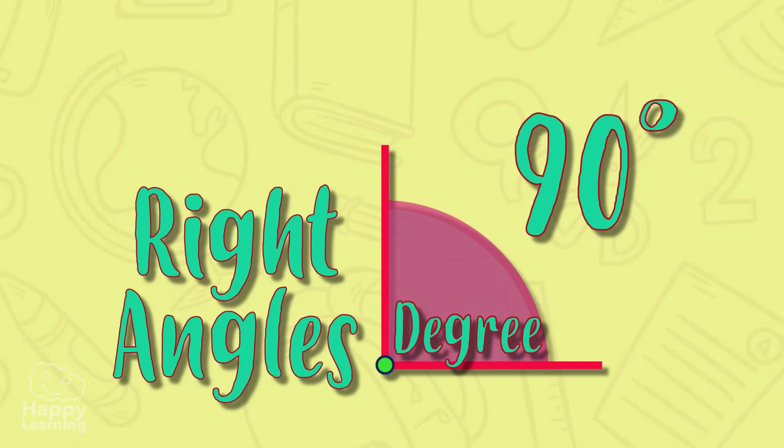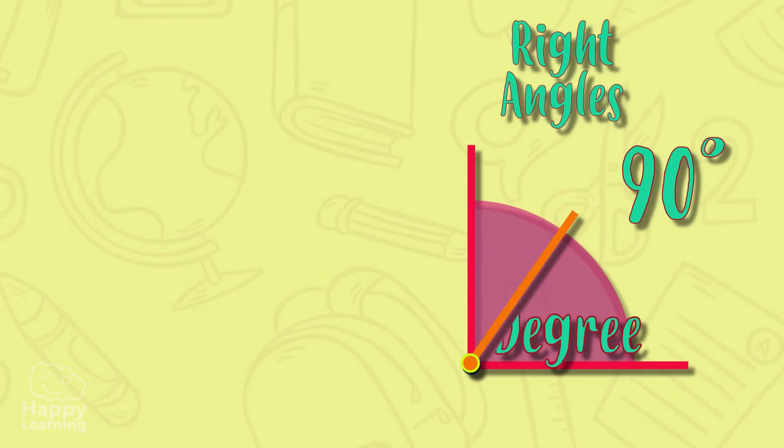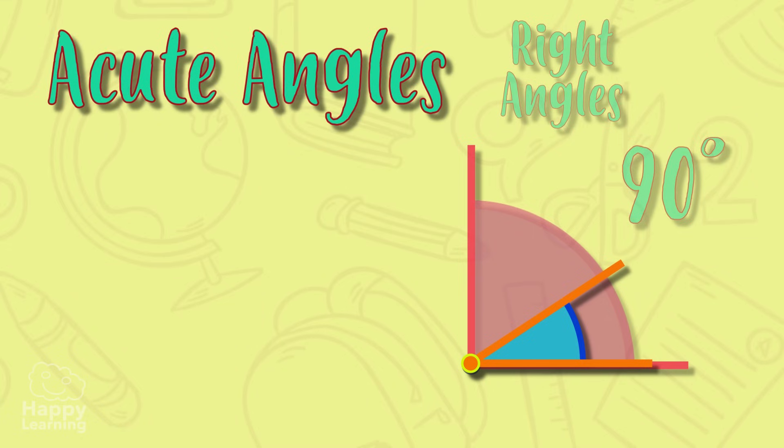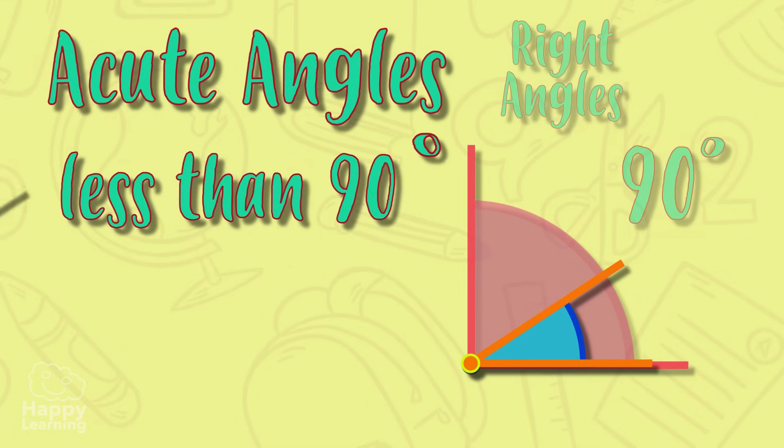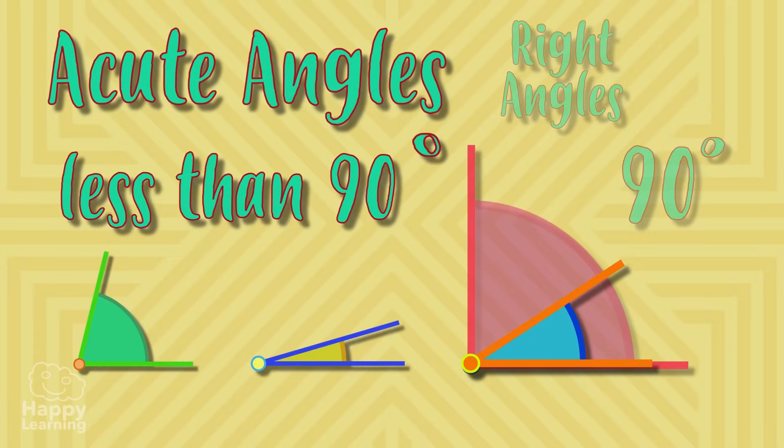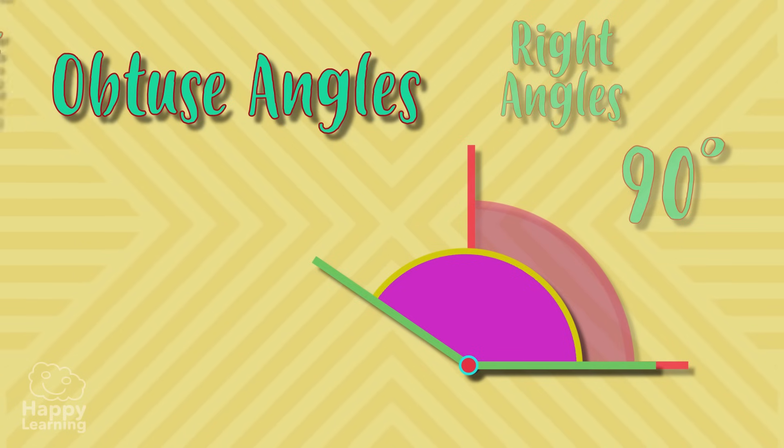The angles that are smaller than a right angle are called acute angles and they measure less than 90 degrees like all of these. And the angles that are bigger than a right angle are called obtuse angles and measure more than 90 degrees like all of these.